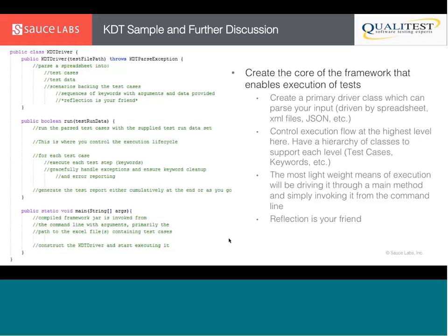Reflection is your friend here. Reflection is code that can look at your code and find things and do things with them — Java has a Reflection API, C# and all object-oriented languages typically have something similar. It's so important because if you're driving your KDT framework with a spreadsheet or XML or JSON, you need to be able to take the name of a keyword and go find that class so you can instantiate the appropriate object and execute it. Reflection was the key to unlocking a smooth and easy-to-use KDT framework.